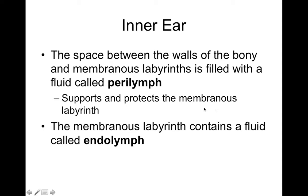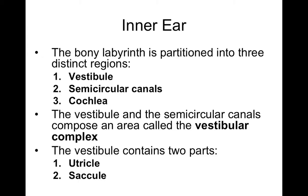The vestibular complex has two main parts: the utricle and saccule. Within the utricle and saccule, we have something called the macula, which is the sensory epithelium involved in understanding your head's position in space — basically the tilt of your head. The semicircular ducts project off the vestibule and are involved with understanding angular velocity of your head, like if you move your head rapidly, knowing how fast you're moving it and at what angle.